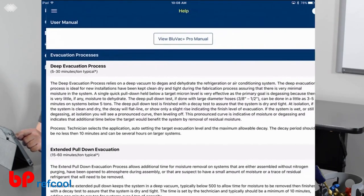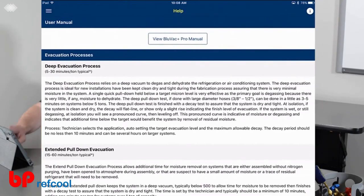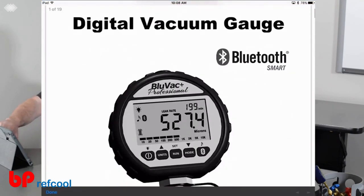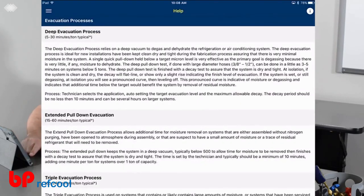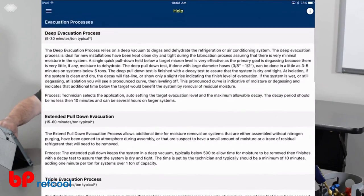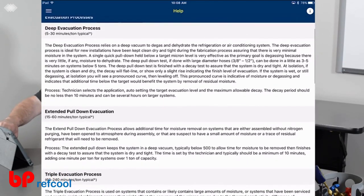We go into our help screens. Help pulls in a Bluvac manual, so you can have a full copy of the manual here. If there's any questions you have about the vacuum gauge, you can pull that up on your display.